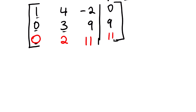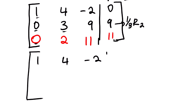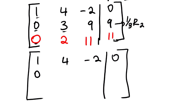We need to change the leading element of row 2 to be 1, so we multiply 1/3 on row number 2. 1/3 times 0 is 0; 1/3 times 3 is 1; 1/3 times 9 is 3; and 1/3 times 9 is 3. Row 1 and row 3 remain: 0, 2, 11, 11.